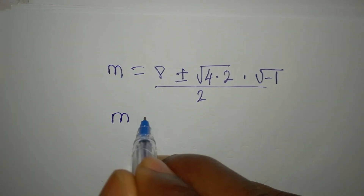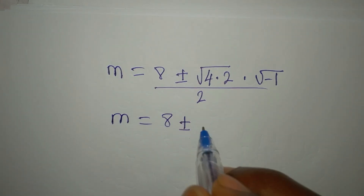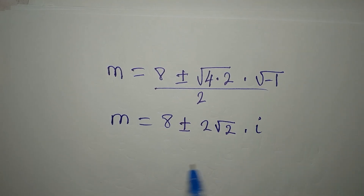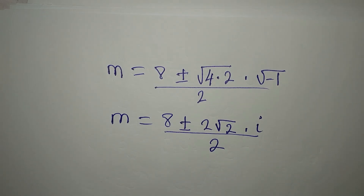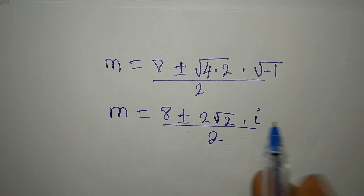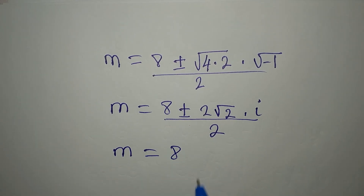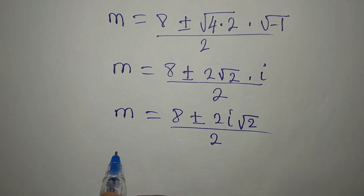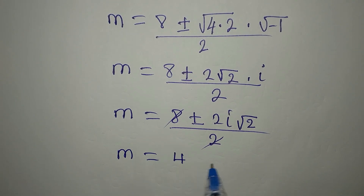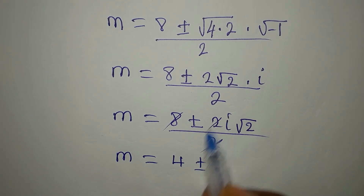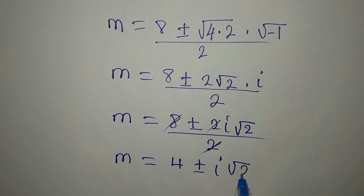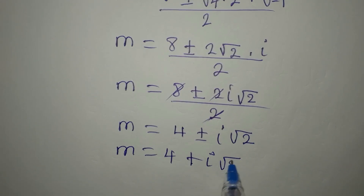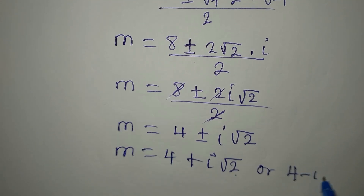So m equals 8 plus or minus: square root of 4 is 2, so we have 2 root 2 times square root of negative 1, which is imaginary — we write i for that — all divided by 2. Dividing through by 2: m equals 4 plus or minus i root 2. So m equals 4 plus i root 2 or m equals 4 minus i root 2.